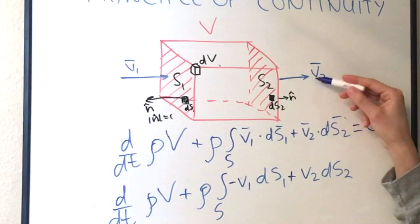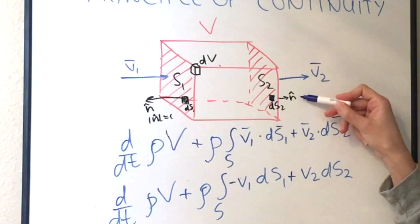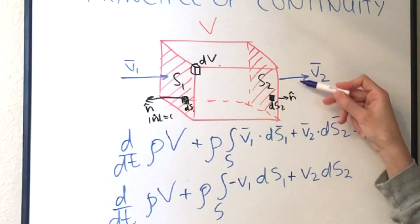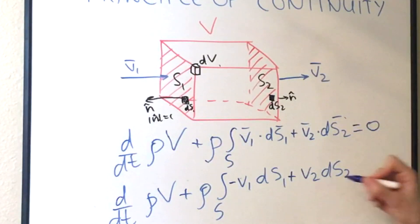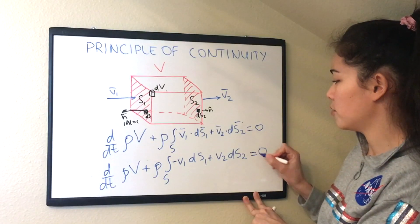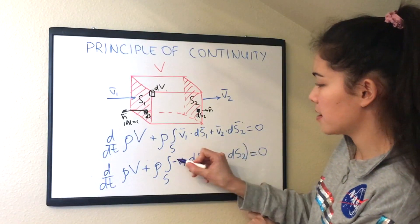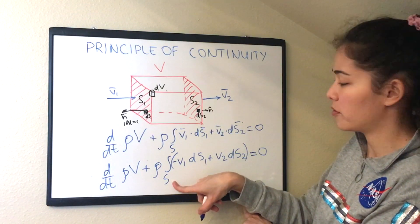And then let's see what the dot product will give us. It's just positive 1 because they are pointing in the same direction. So this plus stays the same. This is all equals to 0. But remember that this is all inside the control surface integral.